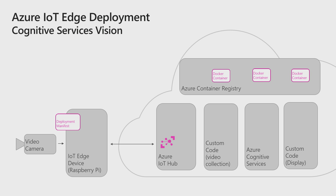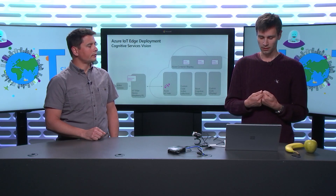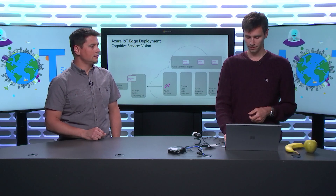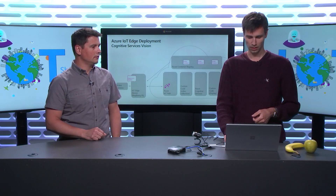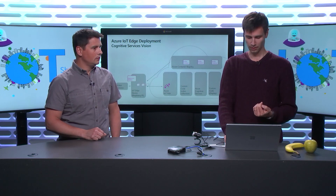IoT Hub then pushes this deployment manifest to your Edge devices when you click the deploy button. The Edge device is running the IoT Edge runtime — that's the prerequisite — and it's hooked up to a specific instance of IoT Hub. Whenever the device receives this deployment manifest, it understands that it should go fetch those three containers. That's the workload that it brings down from the cloud to the local device.